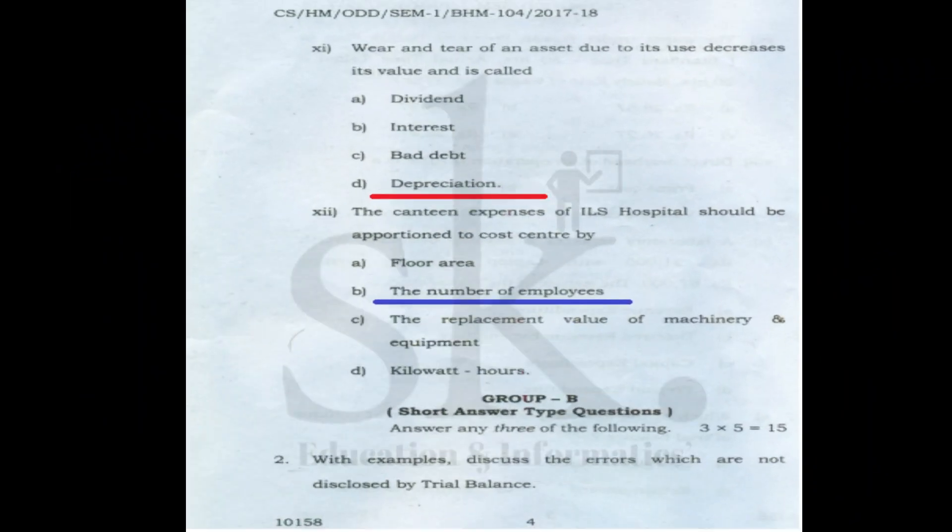Question number twelve: canteen expenses of ILLS Hospital should be apportioned — as discussed before, apportionment is based on the number of employees availing canteen services. The correct option is B, number of employees. This concludes the 2017 paper.